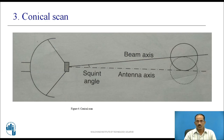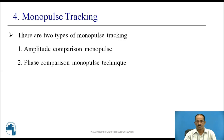The next one is monopulse tracking. There are two types of monopulse tracking technology: amplitude comparison monopulse and phase comparison monopulse. In this video, I am going to discuss only the amplitude comparison monopulse technique.